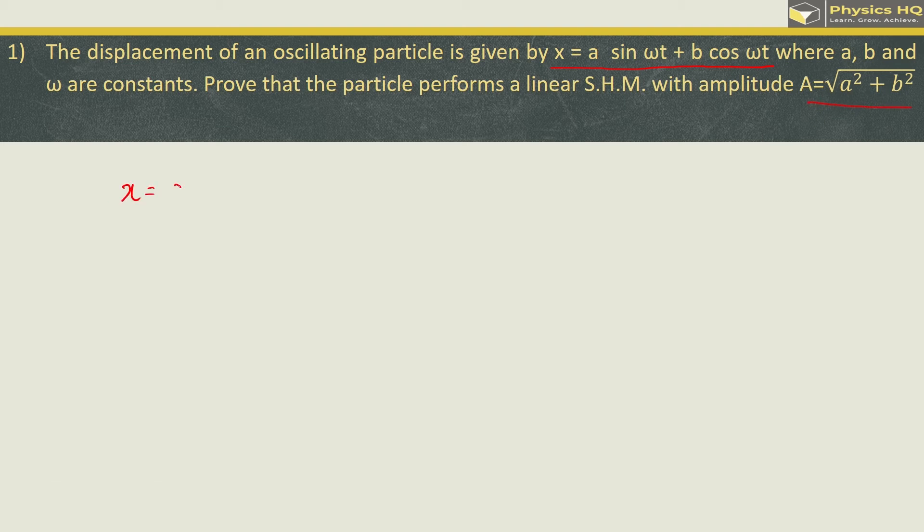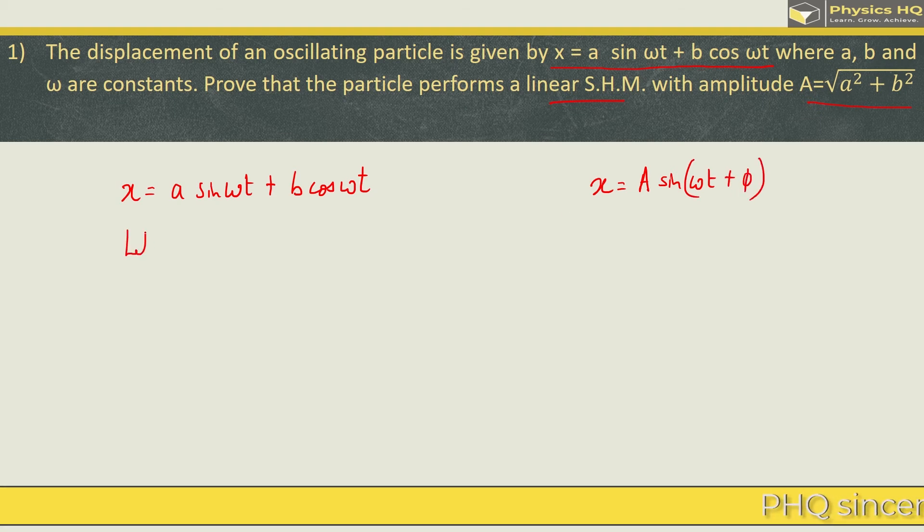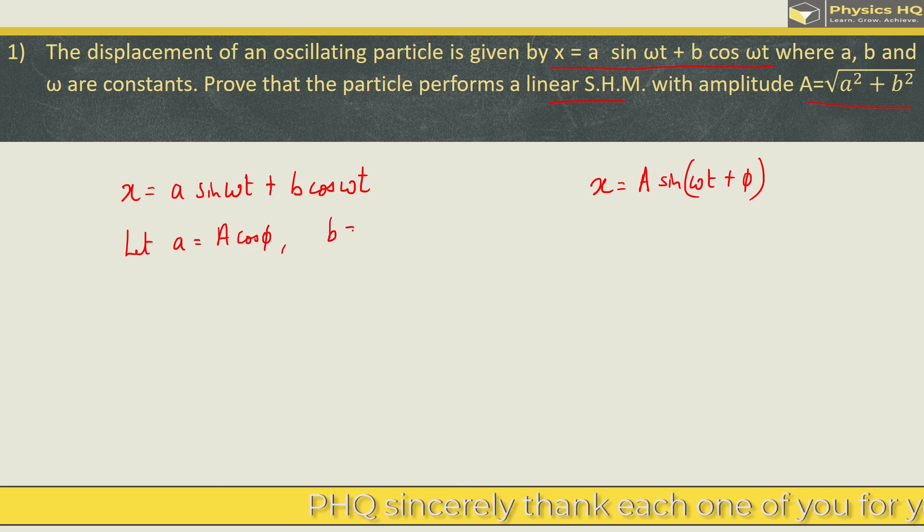So we got x equals a sine omega t plus b cos omega t. Now to prove that a particle performs a linear SHM, we need to bring it in this form: x equals some amplitude A sine of omega t plus the initial phase phi. Now for this what we will do is we will take a equals capital A cos phi and b equals capital A sine phi.